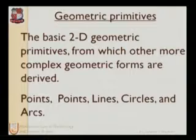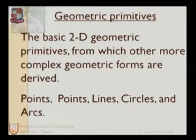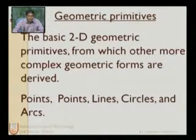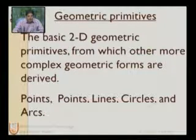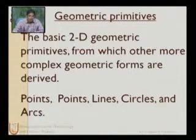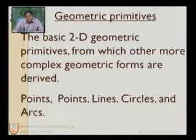The basic 2D geometric primitives — points, lines, circles, and arcs — are the building blocks from which other more complex geometric forms are derived. These complex elements can be formed using the basic geometric primitives, as will be shown in the coming examples.